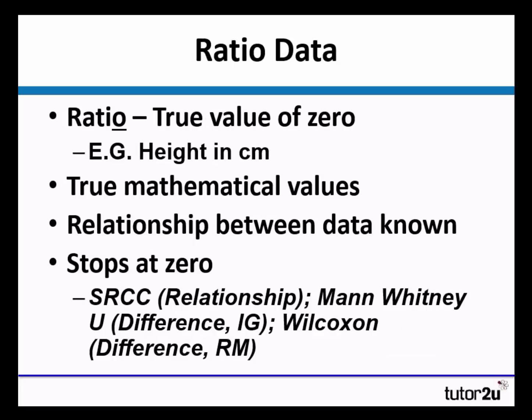Ratio data is remembered because we have a true value of zero. Ratio zero. For instance, height. Height can't go into minus numbers. You cannot be minus 10 centimeters. You're either zero centimeters or above. So there is true mathematical values, and therefore we know the relationship between the data.